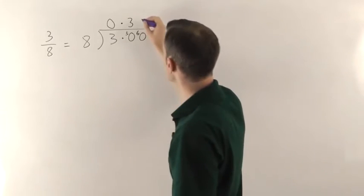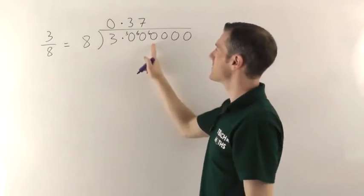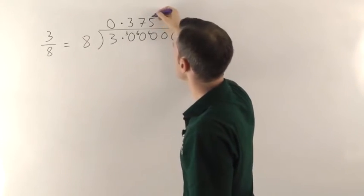And you're saying how many 8s in 60. Well 7 8s are 56, remainder 4 which goes there. How many 8s into 40? That goes 5 times. And the remainder now is 0.